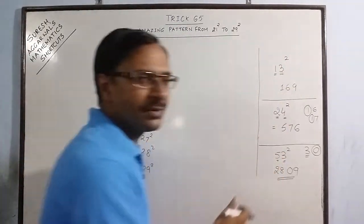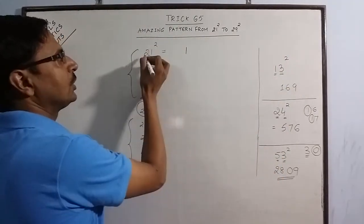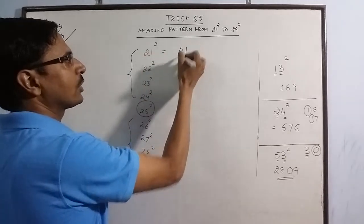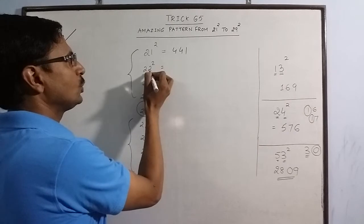Use this method which I just told you. 1 square is 1. 2 into 1 is 2, double of 2 is 4. 2 square is 4.